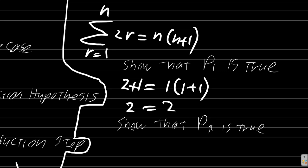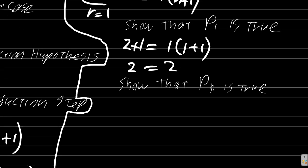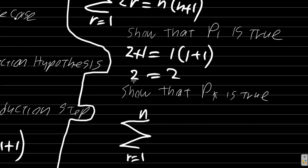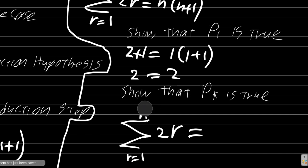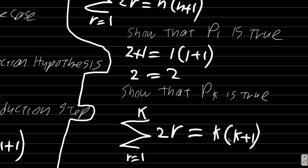It means that you're going to have the sum from r equals 1 to k of 2r. Notice you don't make r equal to k or anything else — r is just a position. First term r is 1, second term r is 2, third term r is 3. And that equals k times k plus 1. So that's the induction hypothesis.